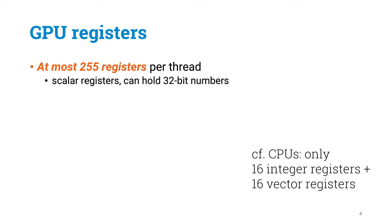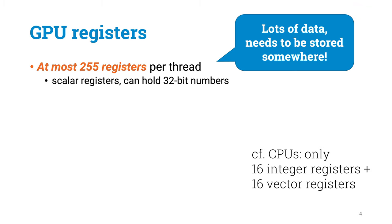The machine language can refer to up to 255 different registers, so you can easily keep, for example, an array of 10 by 10 numbers in the GPU registers. However, using lots of registers isn't exactly free, as we will see soon. All those registers need to be stored somewhere, and if you use many registers per thread, you won't have space for as many active threads.